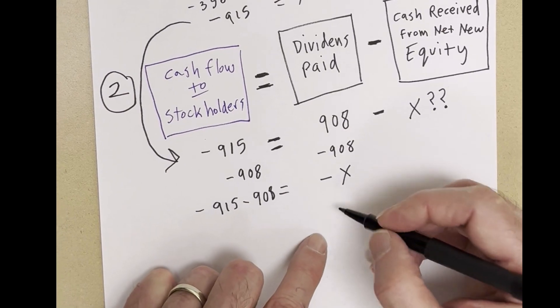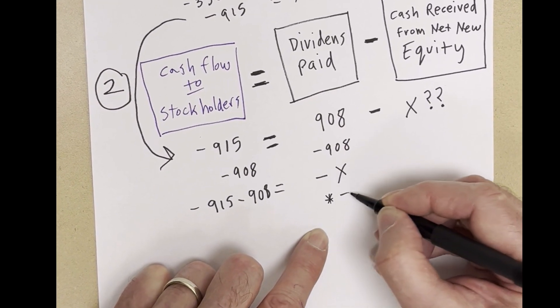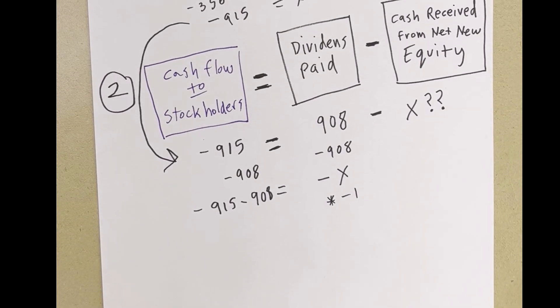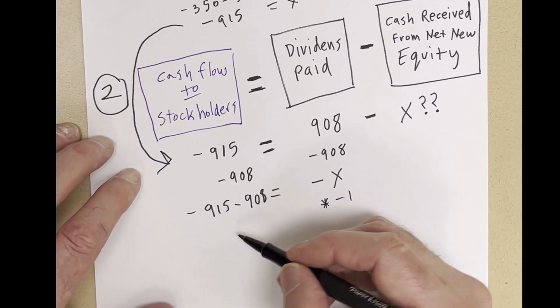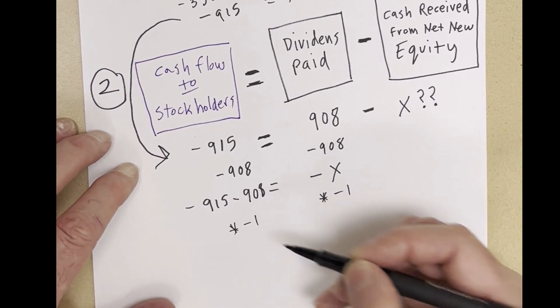So, how do we get rid of a negative? Times negative 1. A negative times a negative is a positive. Over here, times negative 1.